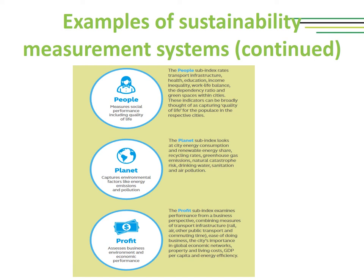Please take a look at the three dimensions featured on the slide. You can see they have a dimension called People, a dimension called Planet, and a dimension called Profit. It is easy to see that each organization tries to relabel the traditional dimensions of sustainability using words or concepts more easily understood. Under the People dimension, which is basically the social dimension of sustainable development, we have a measurement of social performance including quality of life.